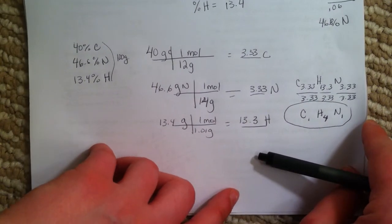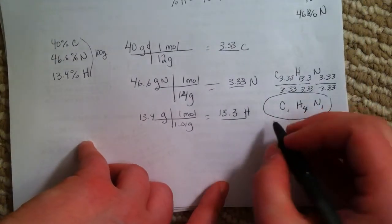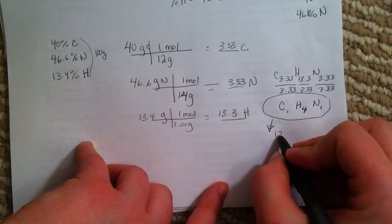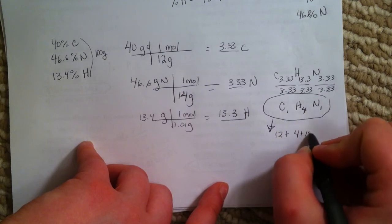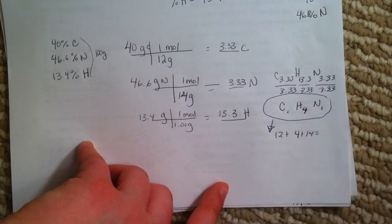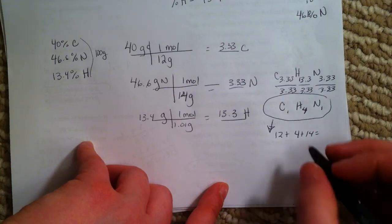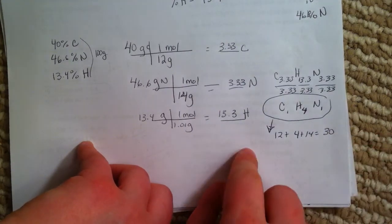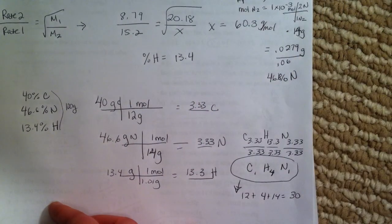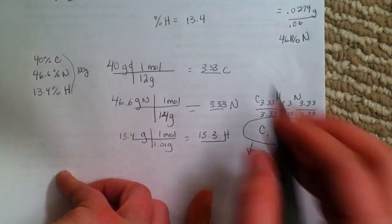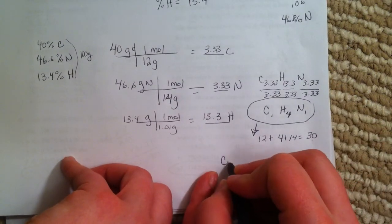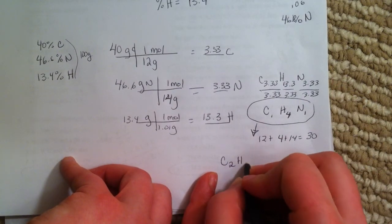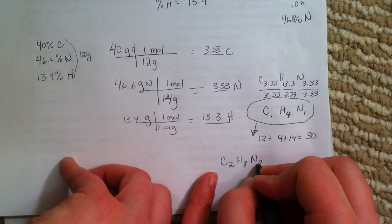The last step is figuring out the molecular formula. We find the mass of this: 12 plus 4 plus 14, which equals 30. I remember from the first part that the molar mass is 60. So I just need to double the 30 to get 60. So this compound is C2H8N2.